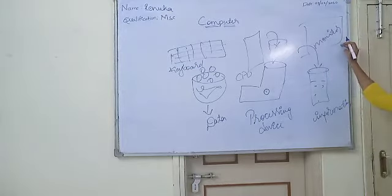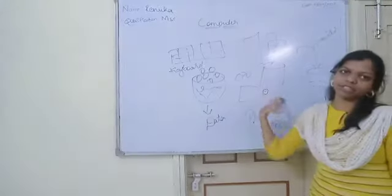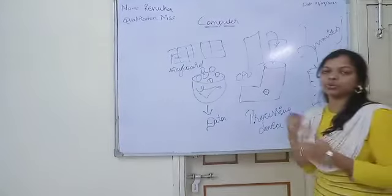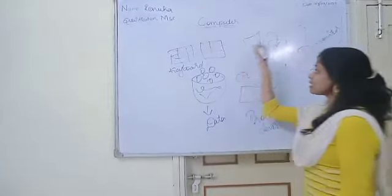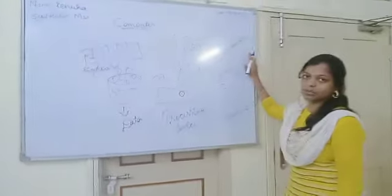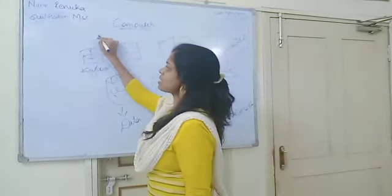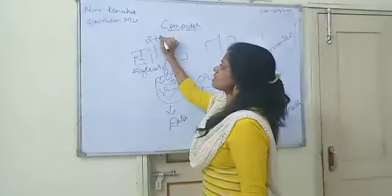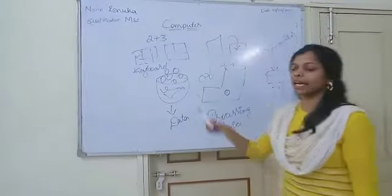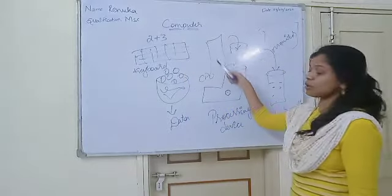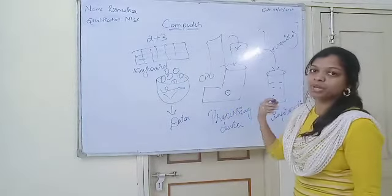At last output. So through the keyboard, we are giving the input. And through the CPU, our input will be processed. And at last whatever output we are getting will be on the monitor. Like example, suppose I am typing as 2 plus 3. I am just typing as 2 plus 3 through the keyboard. What happens? It will be processed. In the CPU, it is going to add this to make 2 plus 3.